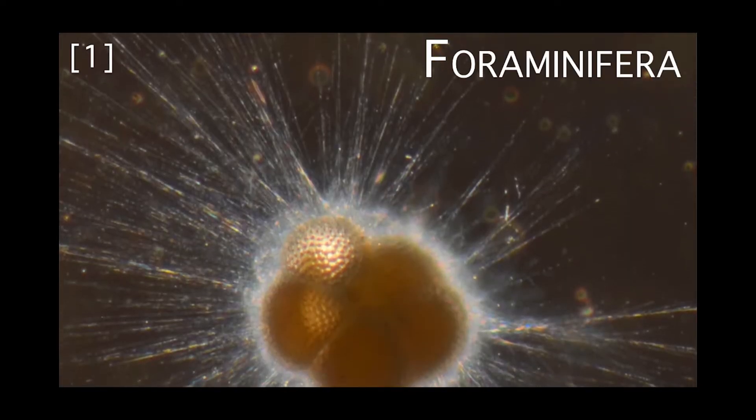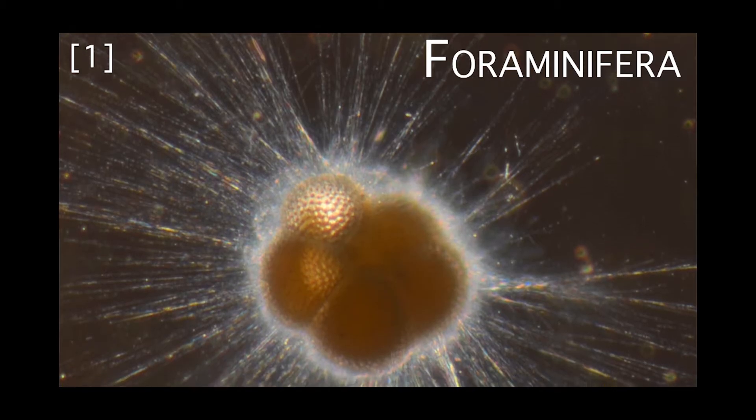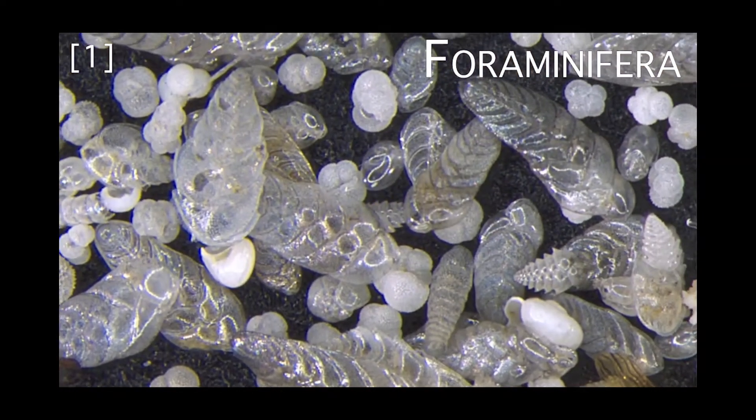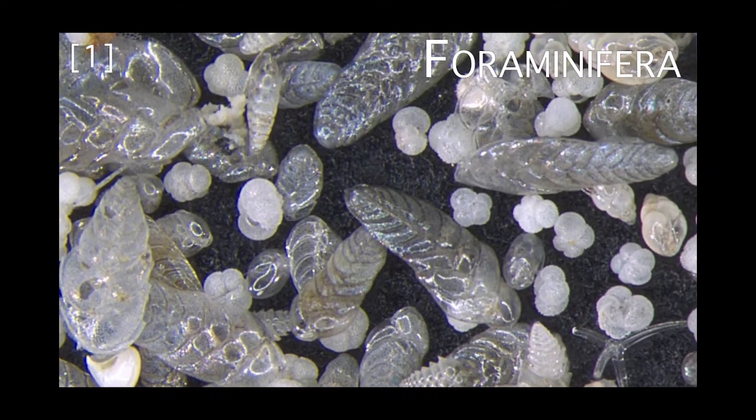There are many different types of these microfossils. One of these are foraminifera, a single-celled organism which are either planktic, meaning they flow around in the ocean, or benthic, which means they live at the bottom of it.